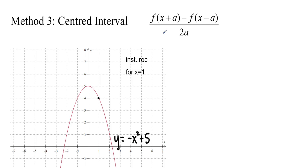Hello and welcome back to Ms. Ma's Advanced Functions class. This is still 2.2, part b: finding the instantaneous rate of change. We're going to find methods 3 and 4.